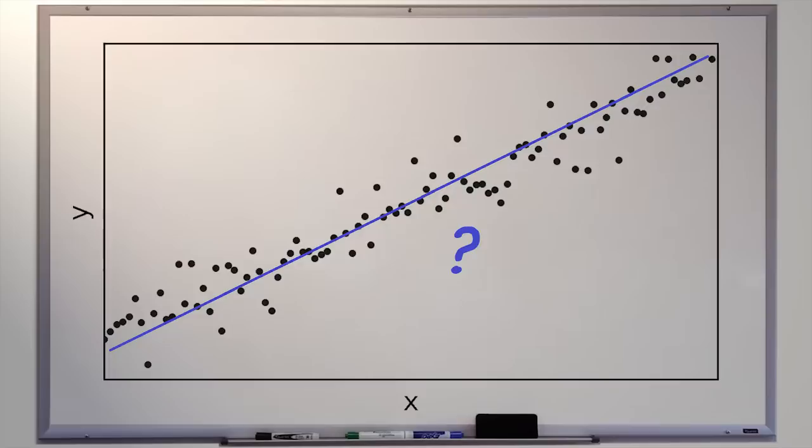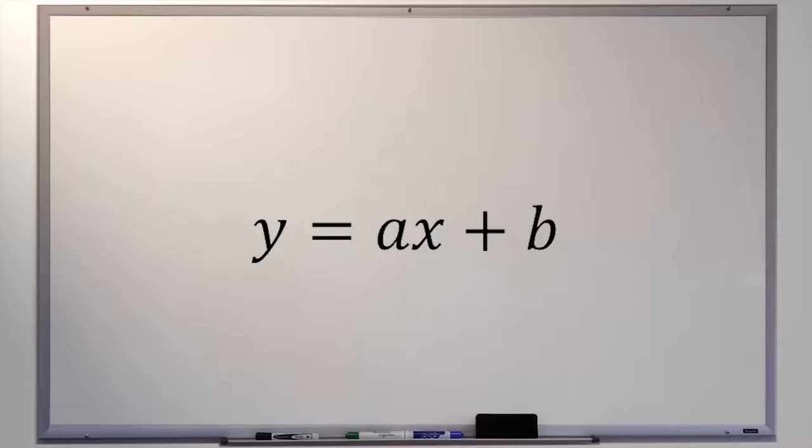You probably remember from high school algebra that a line can be written as Y equals AX plus B — we'll use A instead of M because it goes better with B. In that equation, there are two coefficients, A and B.